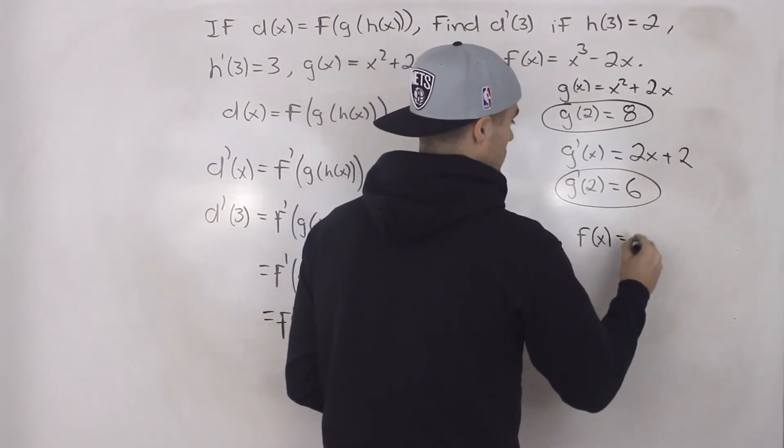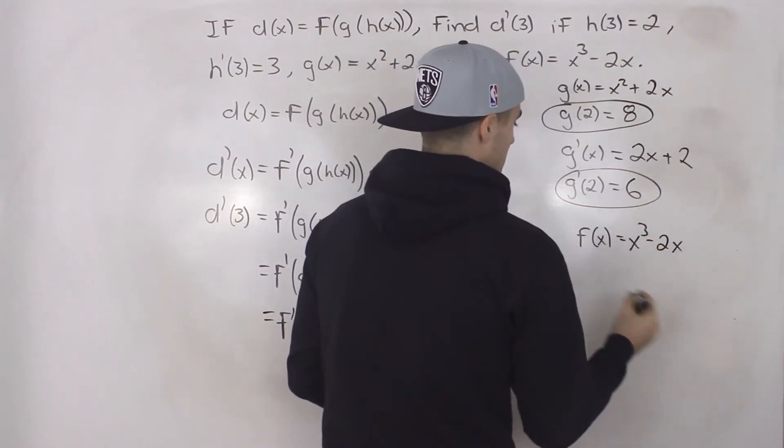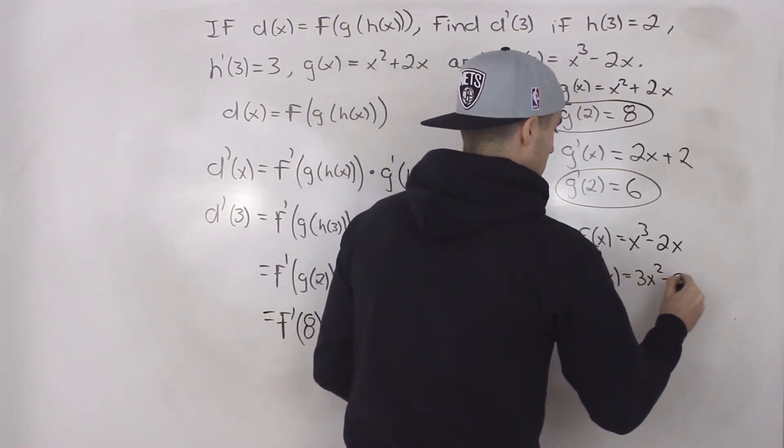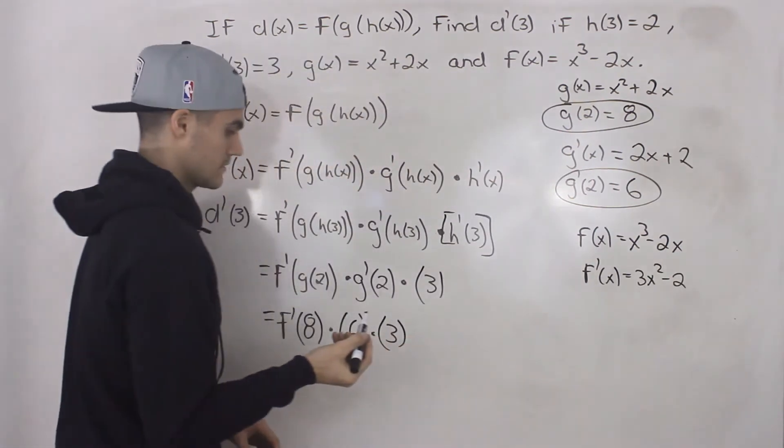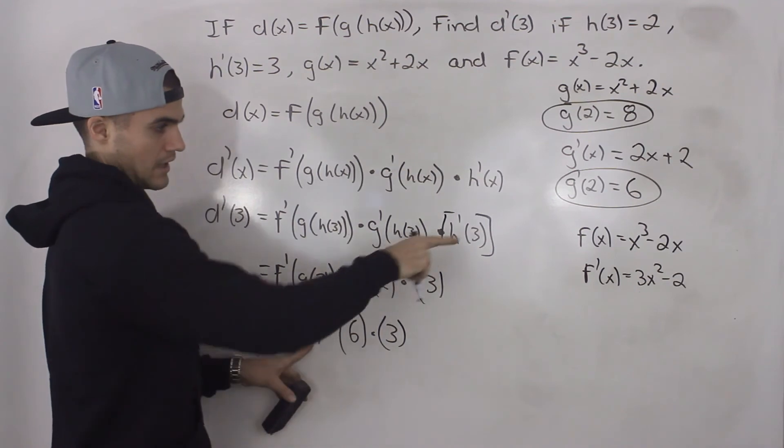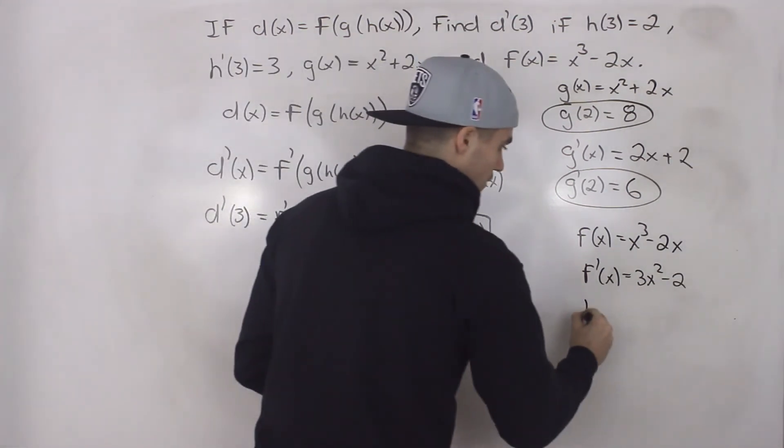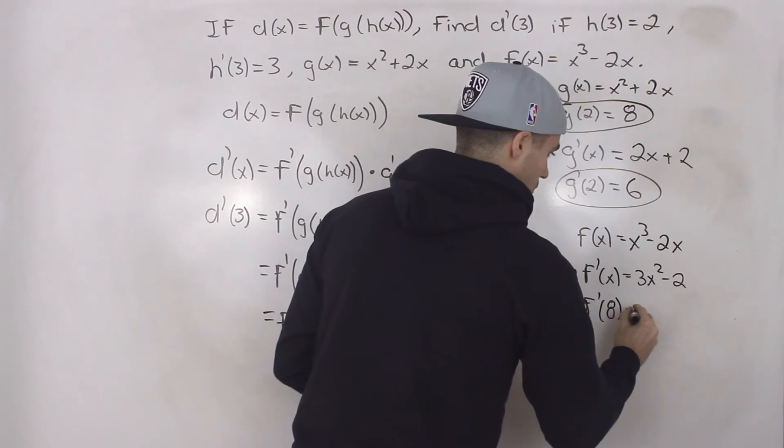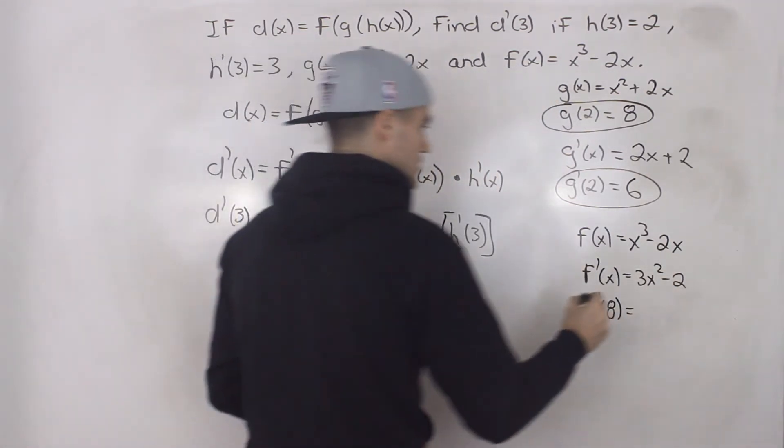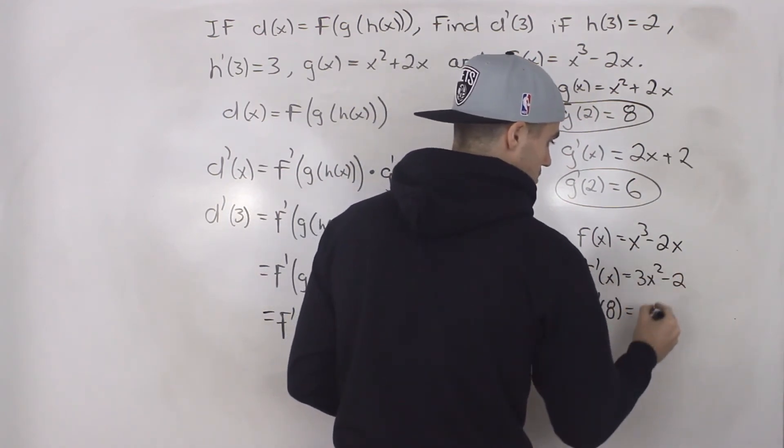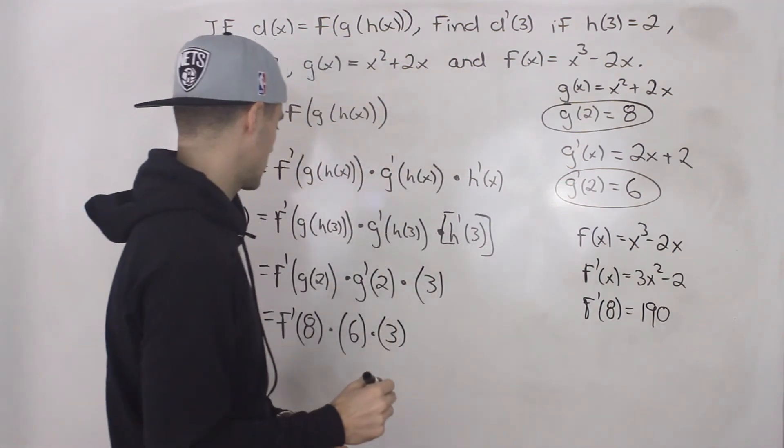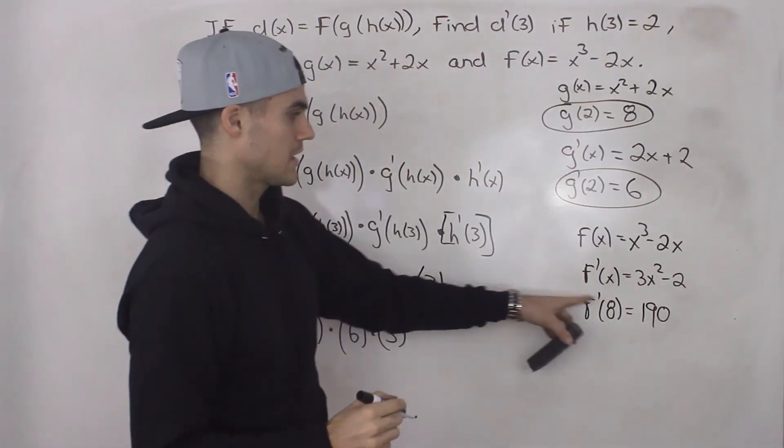So we got f of x equals x cubed minus 2x. So the derivative of that is going to be 3x squared minus 2, like that. And then we can just plug in this x value of 8 in the derivative for f. So f prime 8 would be what? 8 to the power of 2 is 64 times 3 gives us 192. And then 192 minus 2 gives us 190. Right? So I think I got that correctly. f prime 8 is going to be 190.